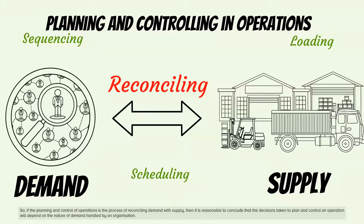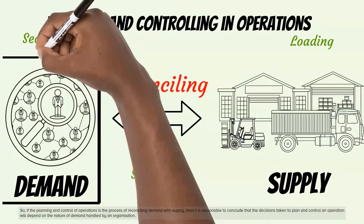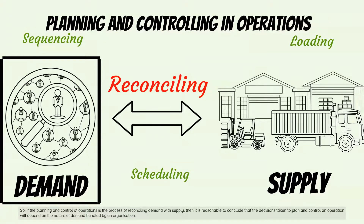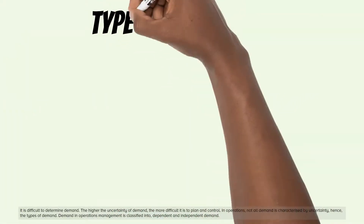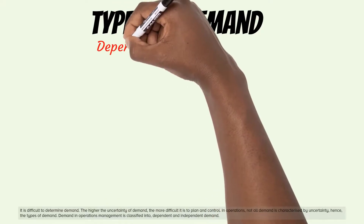If the planning and control of operations is the process of reconciling demand with supply, then the decisions taken to plan and control an operation will depend on the nature of demand handled by an organization. It is difficult to determine demand. The higher the uncertainty of demand, the more difficult it is to plan and control. In operations, not all demand is characterized by uncertainty, hence the types of demand.